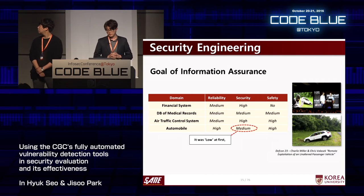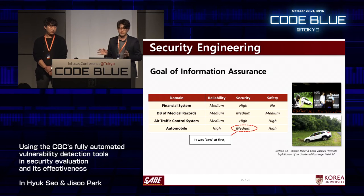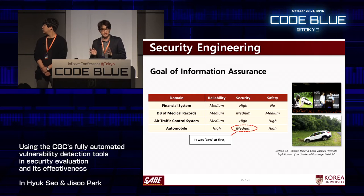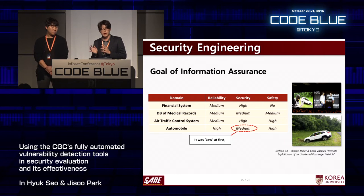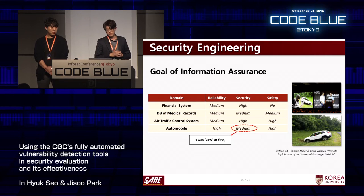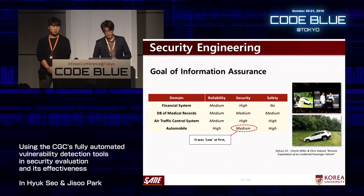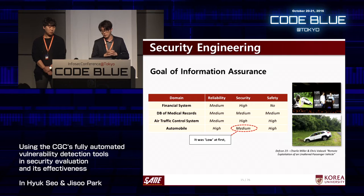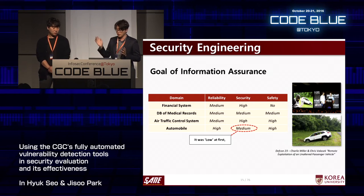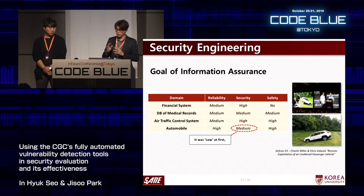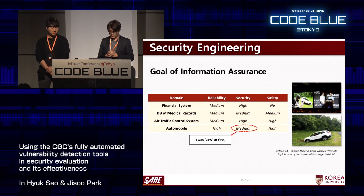Even a few years ago, in the security area, security, availability, and reliability were mainly considered, while other areas like automobile and air traffic control systems mainly considered safety, reliability, and availability. In the case of automobiles, security was low at first, but is now medium because network systems that can directly affect driving have been applied. The pictures on the right show Charlie Miller and Chris Valasek's presentation at DEFCON 23rd — they showed what can happen if a car is hacked. It's very frightening.